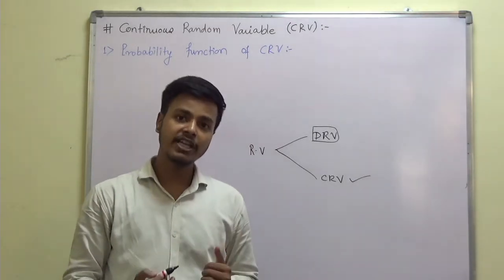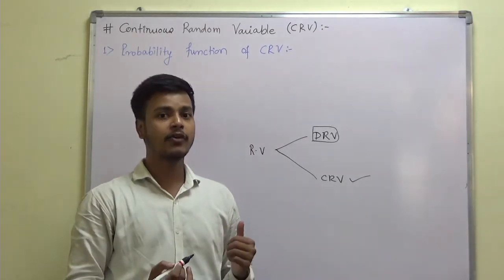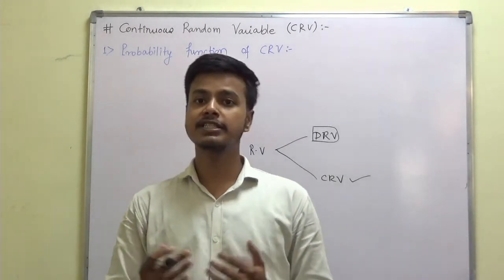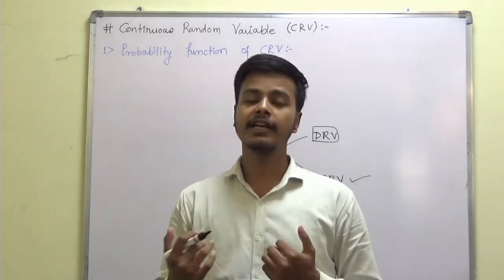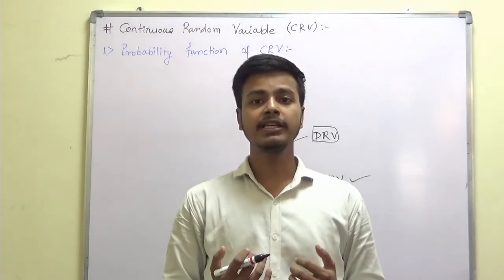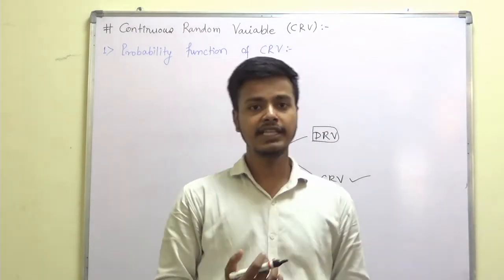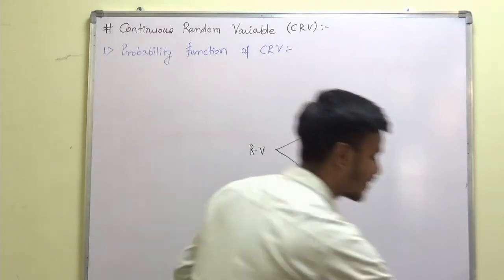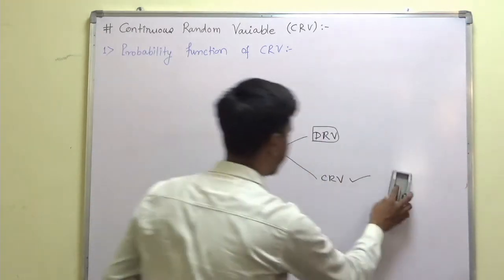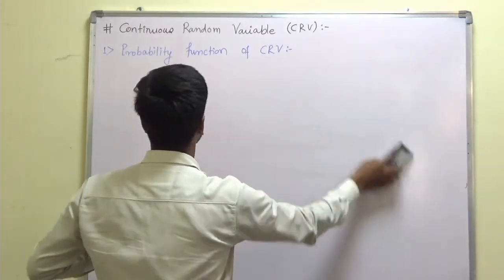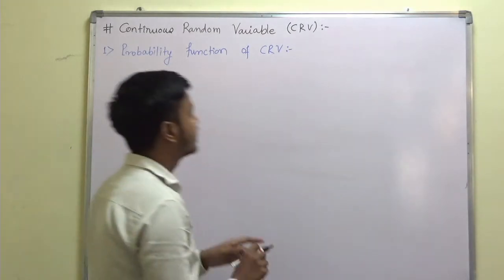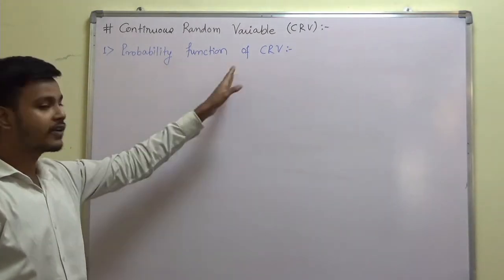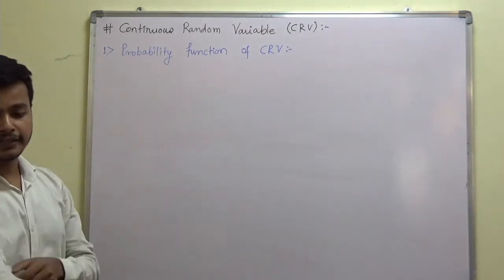First of all, we will see the definition of the probability function and the distribution function for the continuous random variable, and then we will start with examples. So let us begin with the definition of the probability function of a continuous random variable.